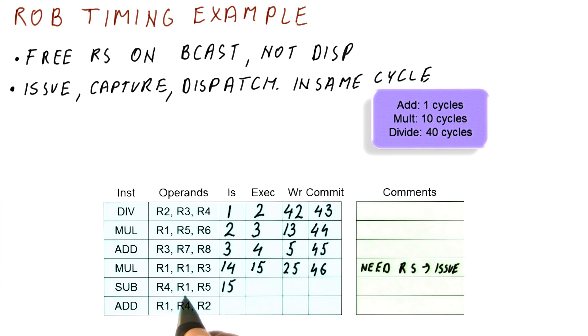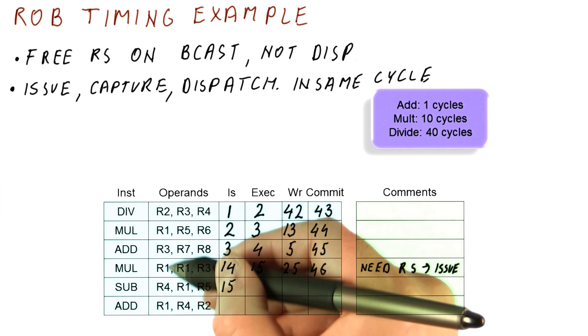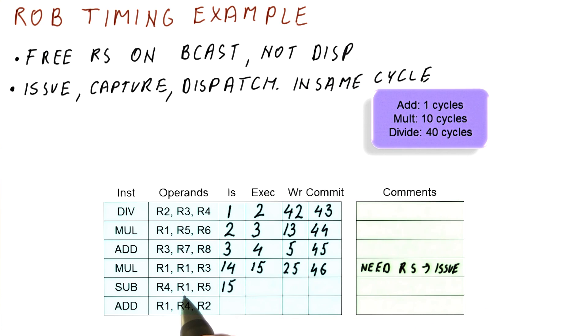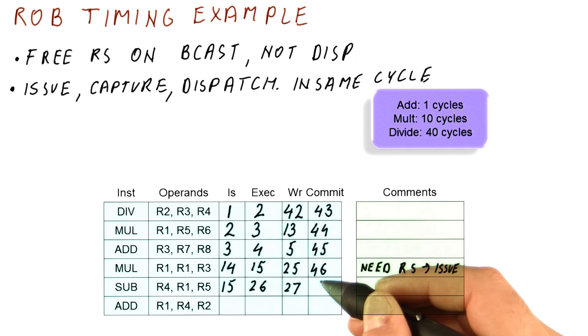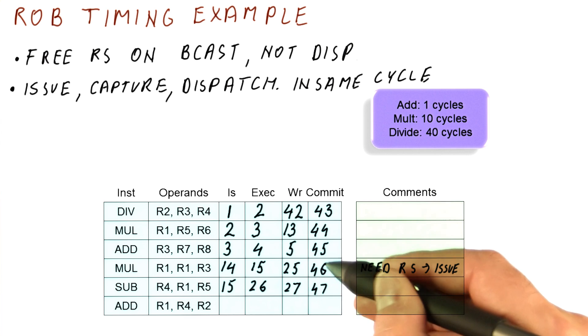So now what happens is we need to figure out when do we execute. We need R1 and R5. The R1 comes from this multiplication. The R5 is already available because none of them are producing it. The R1 here becomes available after this result is written. So in cycle 25, we grab the value we need. And then in cycle 26, we begin executing. It's a subtract. It's going to finish in cycle 27. And it's going to commit in cycle 47, not because of this, but because of this.